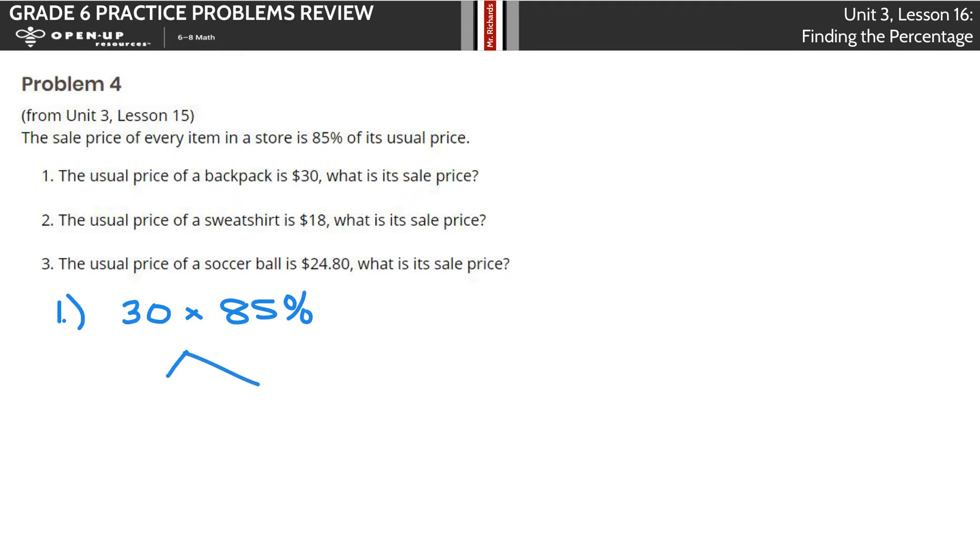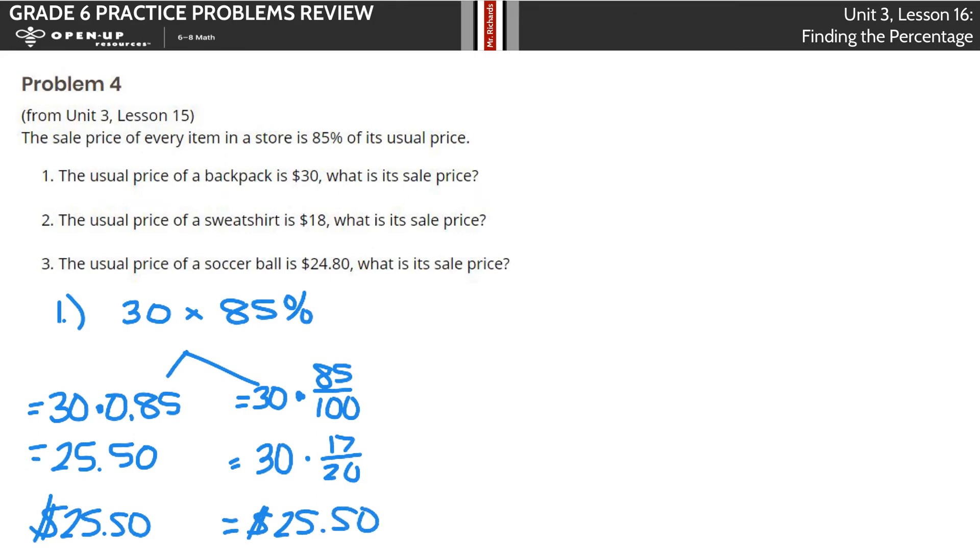One option here is to take 30 times that 85%. You could take 30 times 0.85, which is our percentage as a decimal. When you do that, you get 25.5, and don't forget the penny, so $25.50. Your other option is to take this and multiply it by 85 over 100. 85 over 100 simplifies to 17 over 20 if you divide the top and bottom by 5. And then you work that out and you will eventually get $25.50. So whether you take the decimal route, 85 hundredths is 85%, or the fraction route, you get $25.50 as your solution.